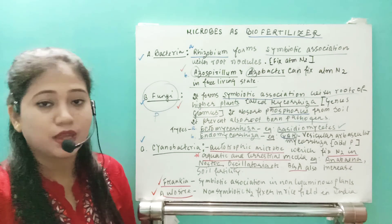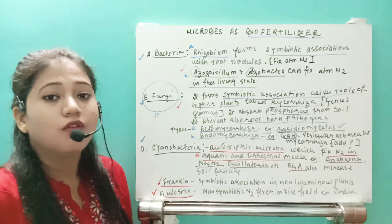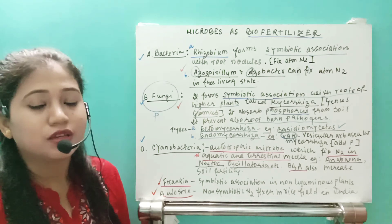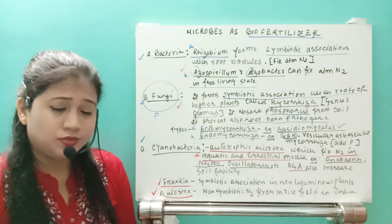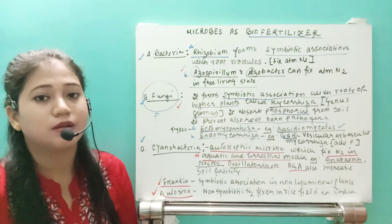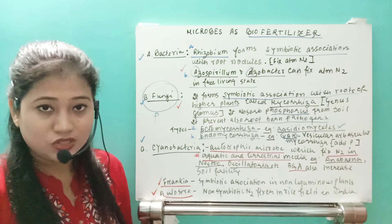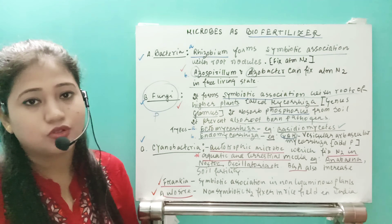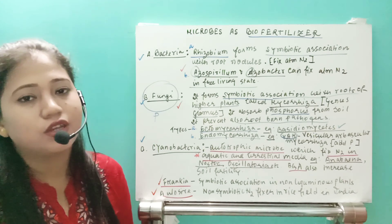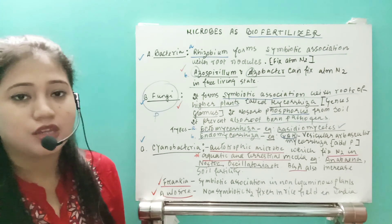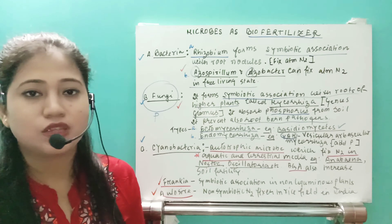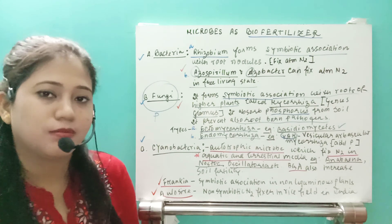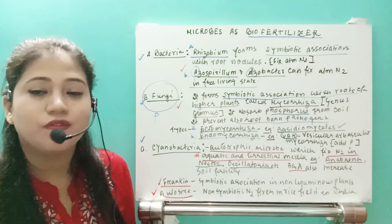That's all about the whole chapter 'Microbes in Human Welfare'. We have studied microbes in households, microbes in industries like beverages and alcohol, bioactive molecules, enzymes, sewage treatment, biogas treatment, bio-control agents, biopesticides, and now biofertilizers. For exams, two possible long questions are sewage treatment and biogas plant. Otherwise, one-to-two mark questions and five mark questions can come. Hope you have understood - thank you.